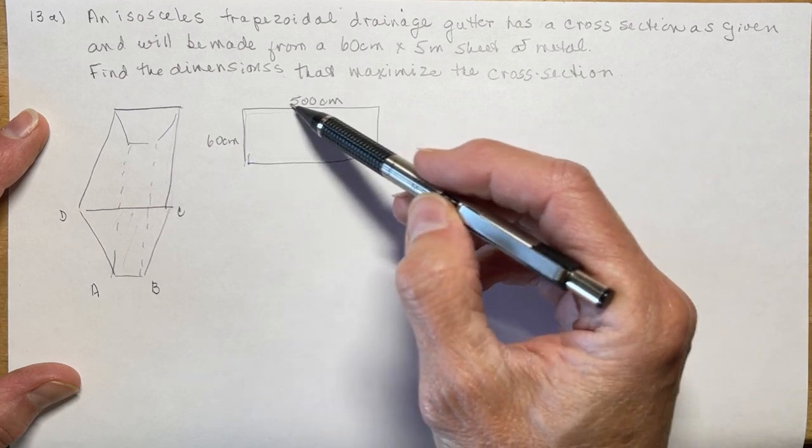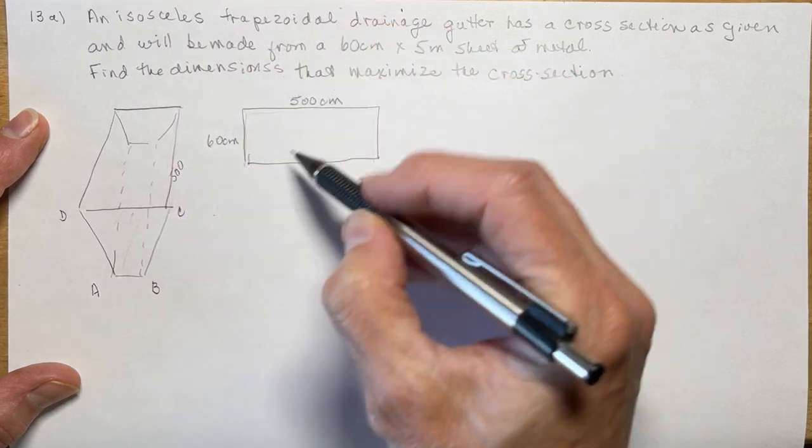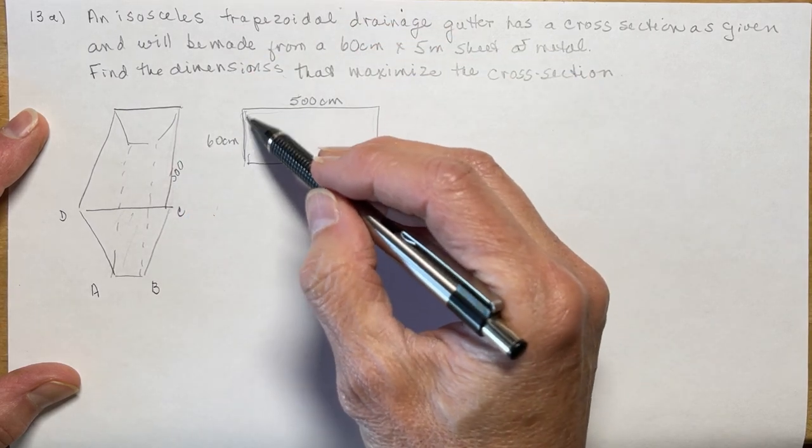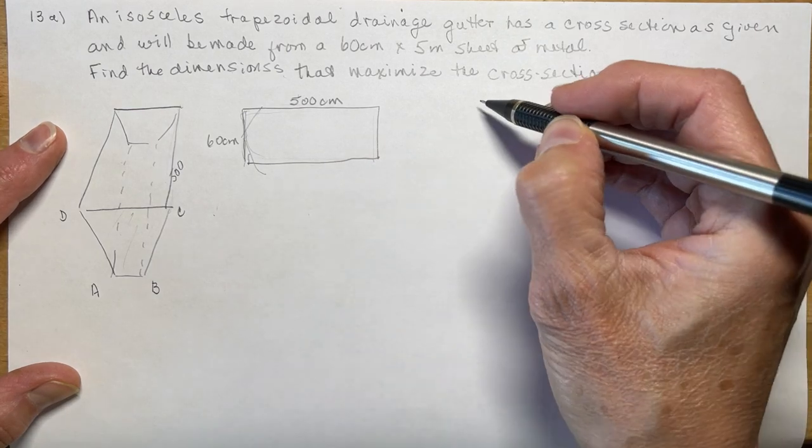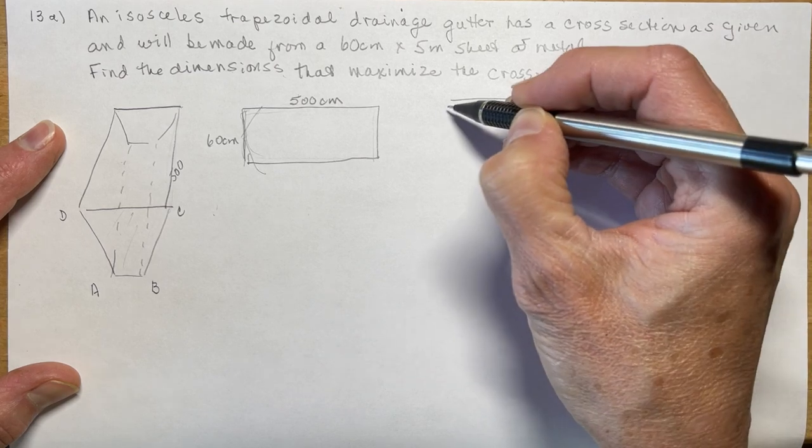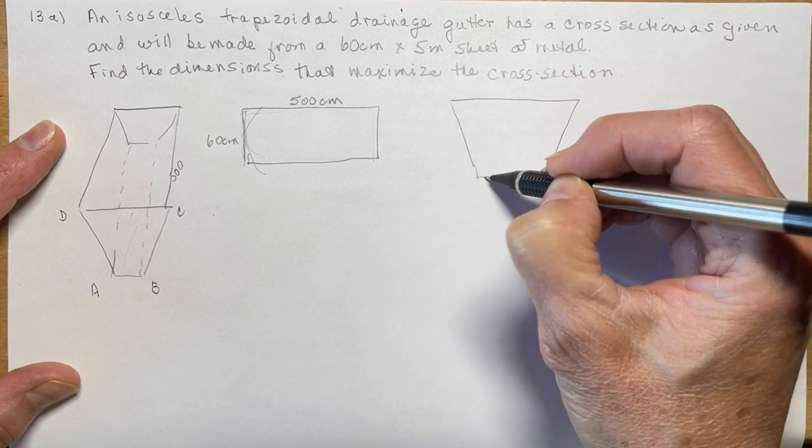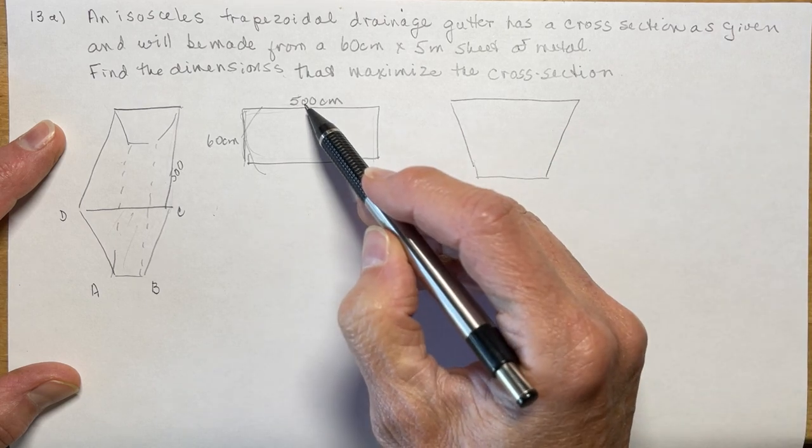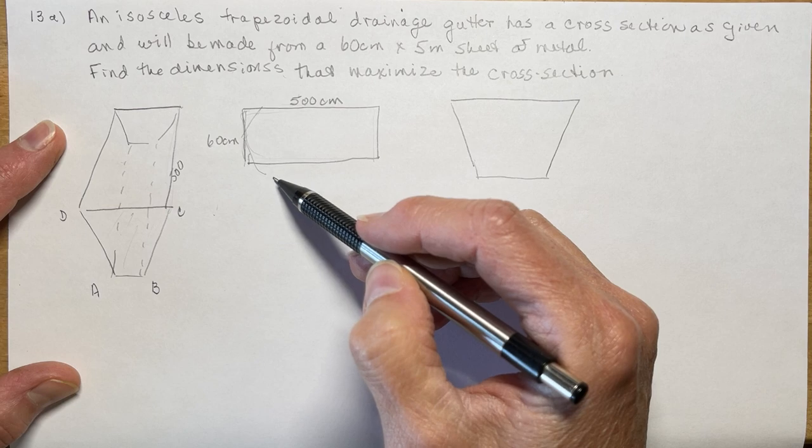It's like one of those open top box questions where you have a sheet of metal. So it's 500 long. That's this length here. That's not going to change. This is the part here that we're going to bend in order to make that shape. And of course I've changed the 5 meters to 500 centimeters so that you're dealing with proper units.